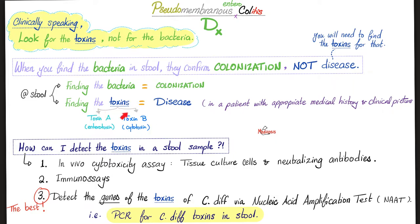Toxin A is the enterotoxin and Toxin B is the cytotoxin. If you detect toxins in the stool, this confirms C. diff colitis. If you found toxins, the patient is sick, the colon is huge, and the patient has altered mental status, high fever, and low blood pressure — this is toxic megacolon. You need the clinical picture and lab results: the presence of C. diff Toxin A and Toxin B in the stool.